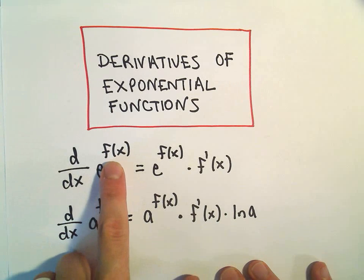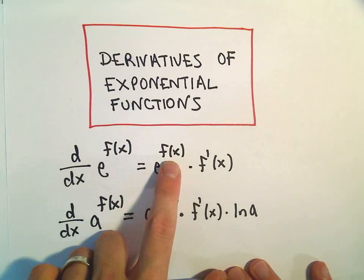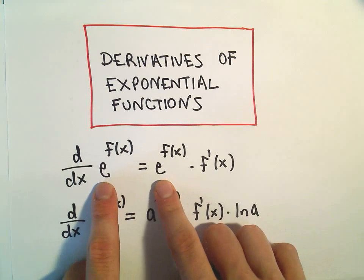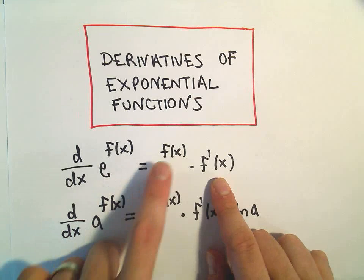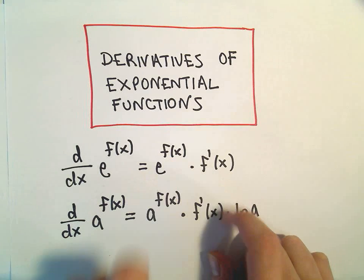If you have e to some function, if we take the derivative of that, we get e to the function, so it just kind of repeats itself. And then we have to use the chain rule and multiply by the derivative of the exponent.